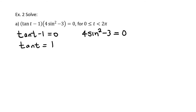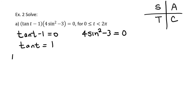This is already factored, so we begin with the zero product property: set tan t − 1 = 0 and 4sin²t − 3 = 0. Solving the first factor gives tangent of t = 1. Using the 'all students take calculus' quadrant setup, tangent is positive in quadrant 1 and quadrant 3. So t = π/4 in quadrant 1, and t = 5π/4 in quadrant 3.